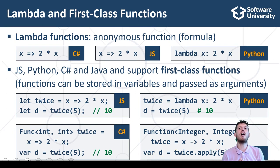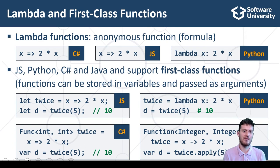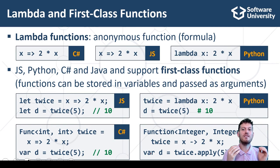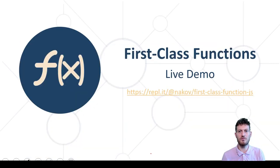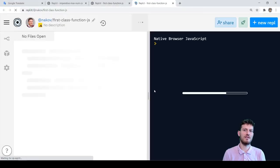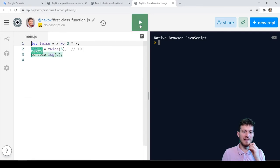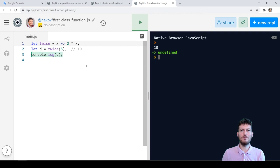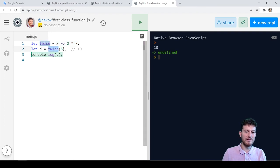First-class functions are an important concept in programming. They allow functions and methods to take other functions as arguments, which is a very powerful tool. We shall learn more about functional programming and first-class functions in the advanced programming modules at SoftUni. The following live demonstration illustrates how to use first-class functions in JavaScript. We open the live example at Replit, wait for it to load, click the run button, and we can see the result — the lambda function from the variable 'twice' is invoked and its result is printed.